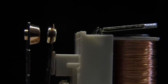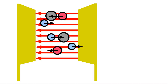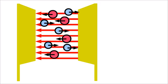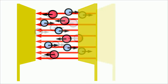An electric arc is formed as the contacts of a switch open and the power being switched is sufficiently large. The higher the voltage and the smaller the gap between the contacts, the higher the electric field, hence the more air molecules across the gap are ionized and accelerated from one contact to the other. The accelerated ions are capable of cracking more air molecules, thus additional ions are created and the air between the contacts gets heated up by the collisions.